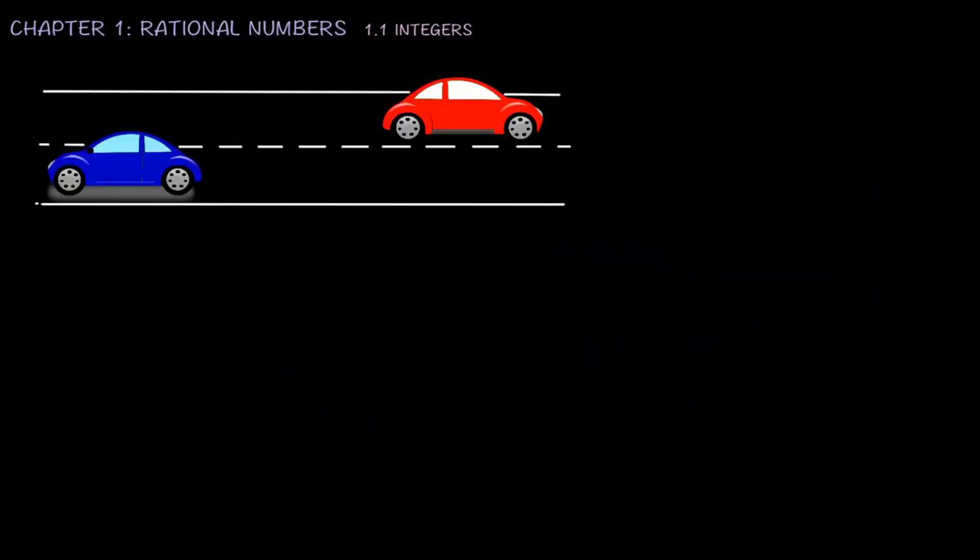Let's see an example. The red car is car A, while the blue car is car B. Car A moves 40 meters towards the right, while car B moves 50 meters towards the left. Represent the movements of car A and car B using a positive number or a negative number.